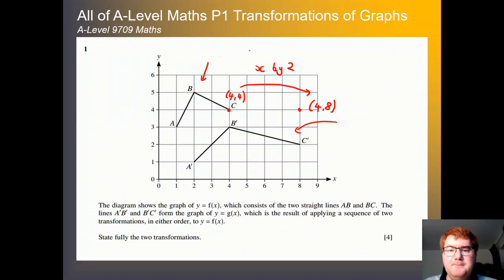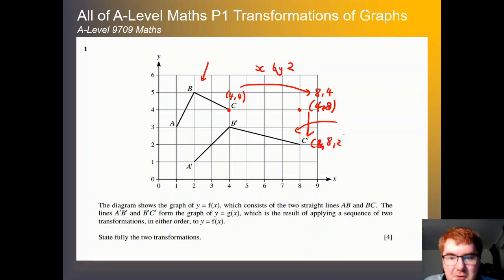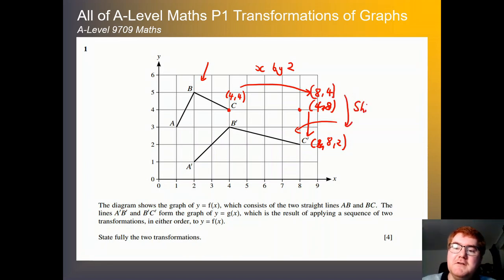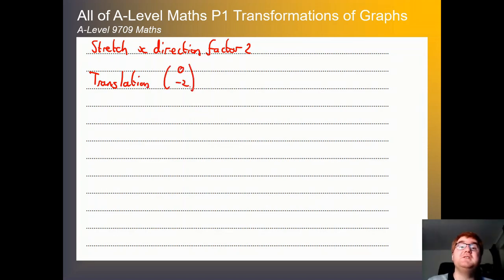Then we want to take this point at (8, 4) and get it down to (8, 2). What do we do to (8, 4) to get to (8, 2)? We need to shift two units down. In the correct notation, that's a translation with vector (0, −2). That's how we express two units down in vector notation. You can do this in either order, as the question states.